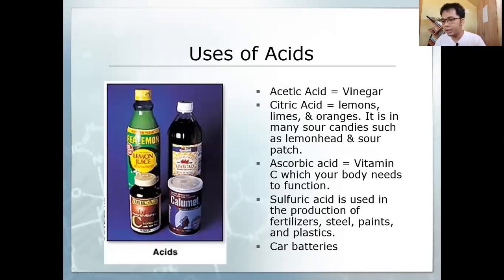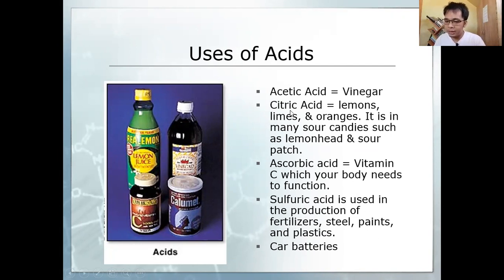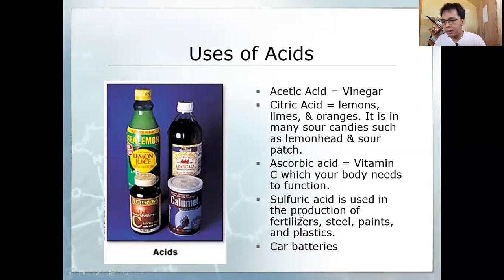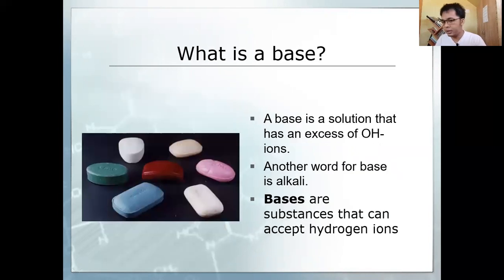What are the household materials that are acids we can see in everyday life? We have acetic acid in vinegar, citric acid in lemon and oranges, ascorbic acid which is vitamin C for the immune system, sulfuric acid for the production of fertilizer, and lead acid batteries found in motors and cars.